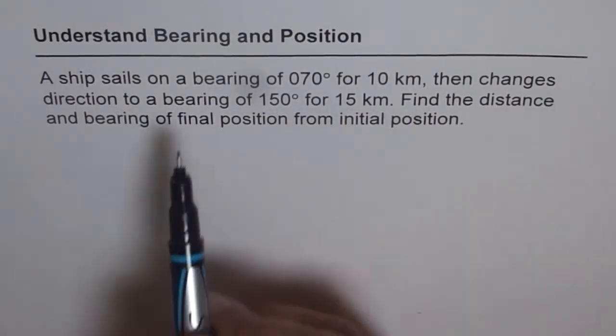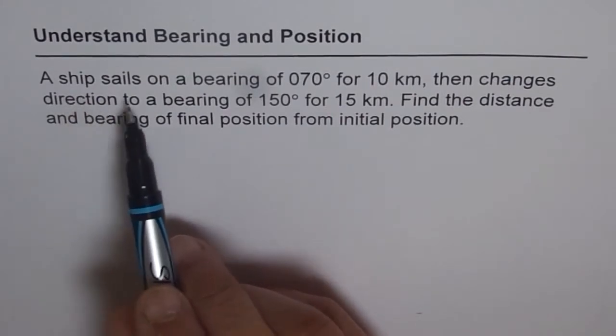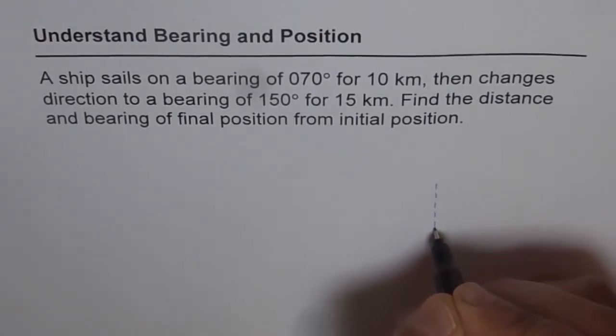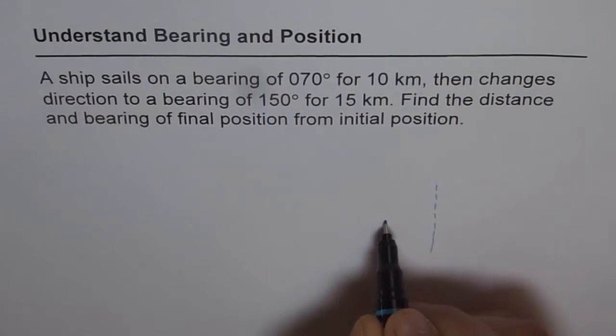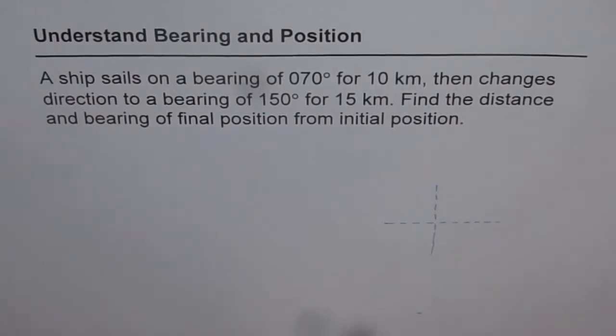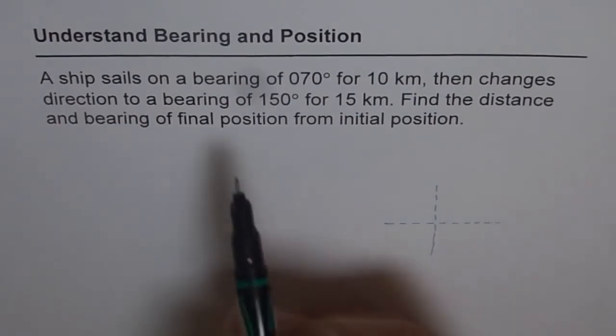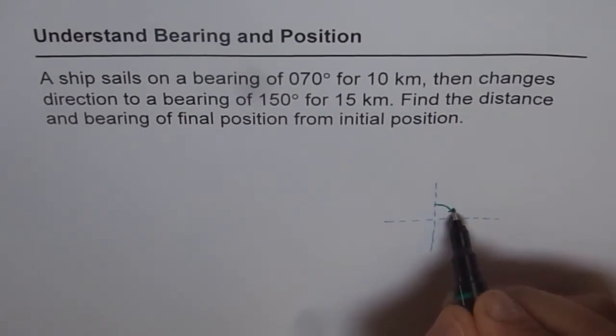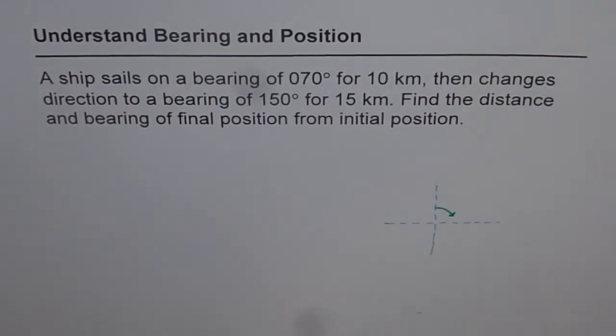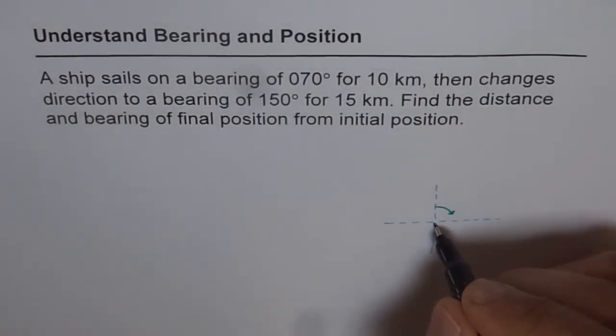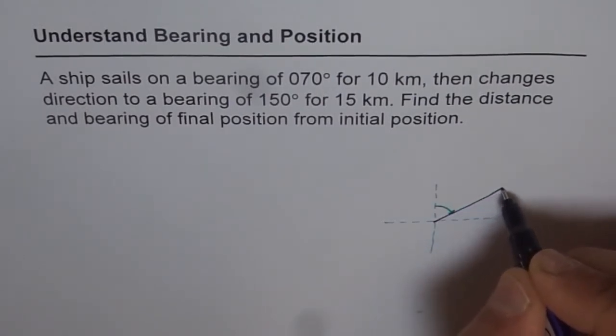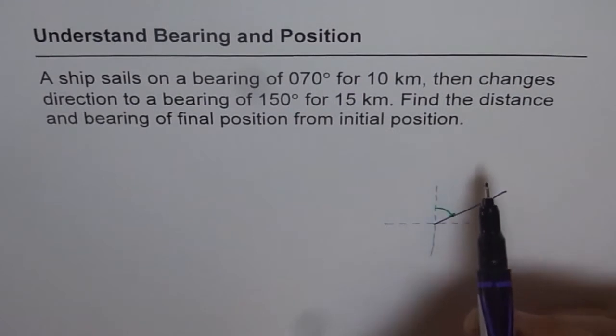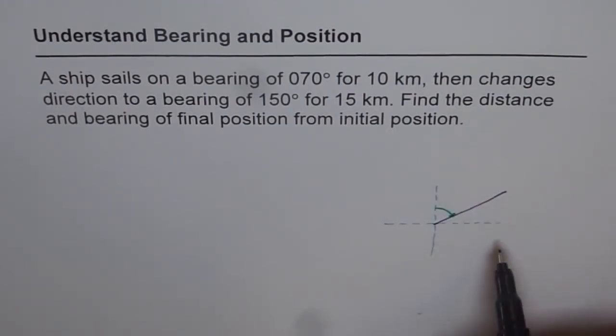So let's sketch the figure which represents this situation. We have a ship that sails on a bearing of 70 degrees for 10 kilometers. So let's say this is our axis that represents north for us, and this represents east-west. Now when we say that the ship is sailing on a bearing of 70 degrees, it means from north the clockwise angle is 70 degrees. Now if that is 70 degrees, then the ship is sailing in this direction for 10 kilometers. So let us say this represents 10 kilometers for us. And that is how it is to be represented on a two-dimensional plane.